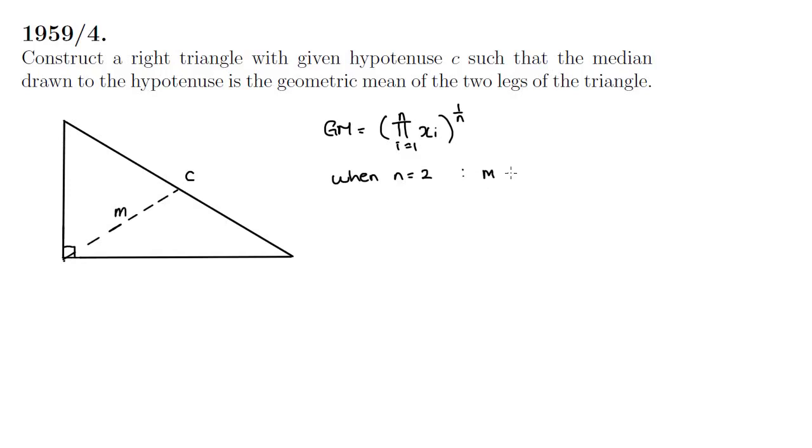We've used m to denote the median drawn to the hypotenuse in the diagram shown and let's let l1 be leg 1 and l2 be leg 2. In this case m would be equal to the square root of l1 l2 or as per the above notation l1 l2 raised to the power of a half.